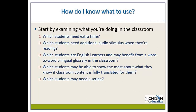How do you know what support or accommodation to use with a student? The best guidance is to start by examining what you are doing in the classroom. Key questions to consider: Which students need extra time? Which students need additional audio stimulus when reading? If I read aloud for all students to meet the needs of a few, are there others who don't actually need it? Which students are English learners who may benefit from a word-to-word bilingual glossary? Which students could show more of what they know if content is fully translated? Which students may need a scribe?